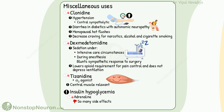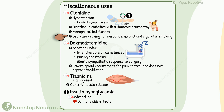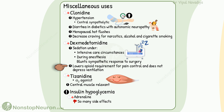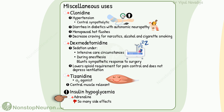Now let's see some additional uses of adrenergic drugs. Clonidine can be used in hypertension where it acts as a central sympatholytic. It can also be used in diarrhea in diabetics with autonomic neuropathy, for menopausal hot flushes, and to decrease craving for narcotics, alcohol, and cigarette smoking. Dexmedetomidine is used for sedation in intensive care and during anesthesia — it blunts the sympathetic response to surgery, lowers opioid requirements for pain control, and does not depress ventilation. Tizanidine is an alpha-2 agonist used as a central muscle relaxant. In insulin hypoglycemia, adrenaline may be used in extreme cases if glucagon is not available, though this is associated with many side effects.